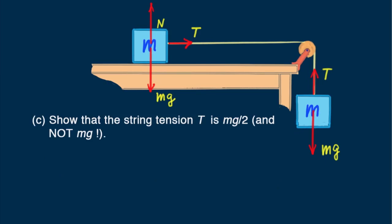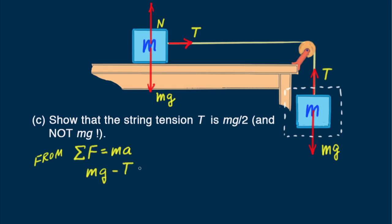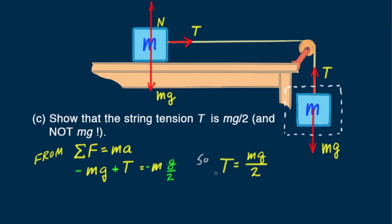Part C: Show that the string tension t is mg over 2, and not mg. Let's now consider just the hanging block as our system of interest, because for this system the force we're looking for, t, is an external force that is not canceled. The only other force acting in this system is mg, so t acts upward and mg acts downward. From the sum of the forces equal mass times acceleration for the falling block, we get mg minus t equals ma. Recalling that the acceleration is g over 2, and with a bit of algebra — multiplying both sides by minus 1 — we find that the string tension for the two-block system is half the weight of either block.